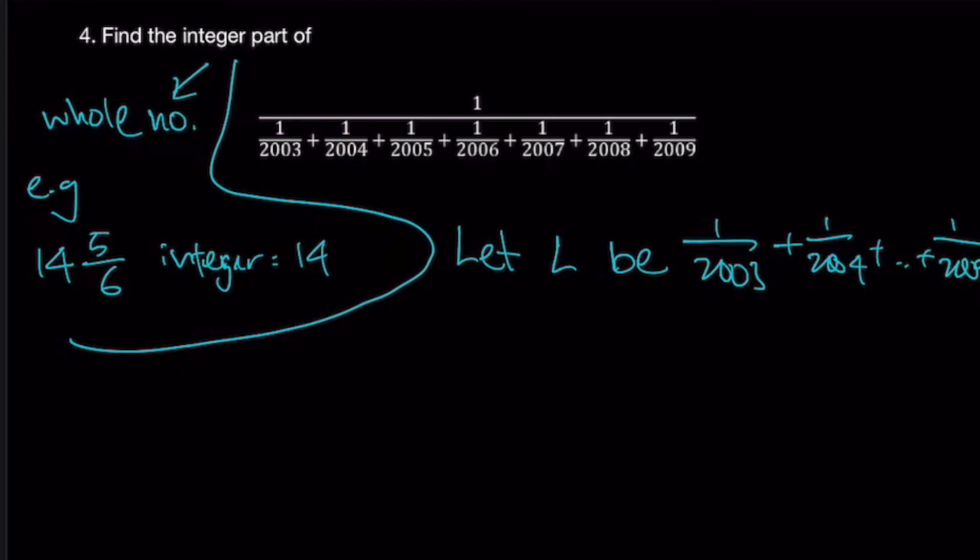Now, let L be the fraction below which is L be 1 over 2003 plus 1 over 2004 all the way to 1 over 2009. Okay, so you look, this whole fraction will be equal to 1 over L. Okay, so instead of writing 2003 plus 2004, let's change everything to 2003. Okay, it will look something like this.